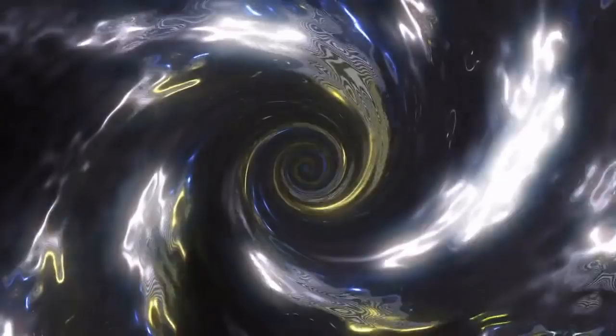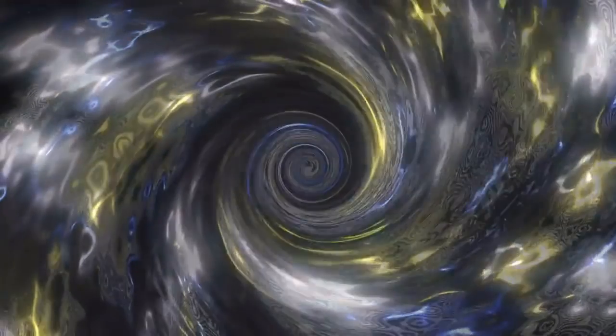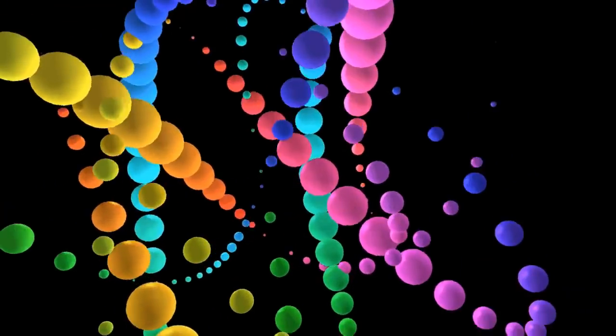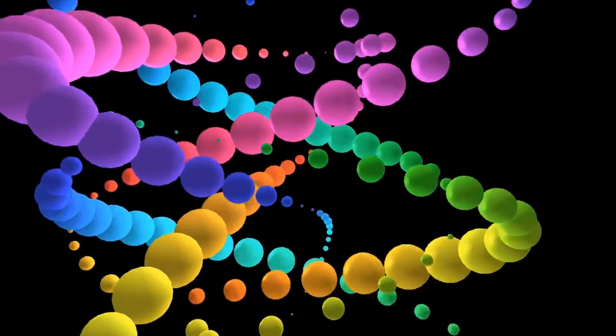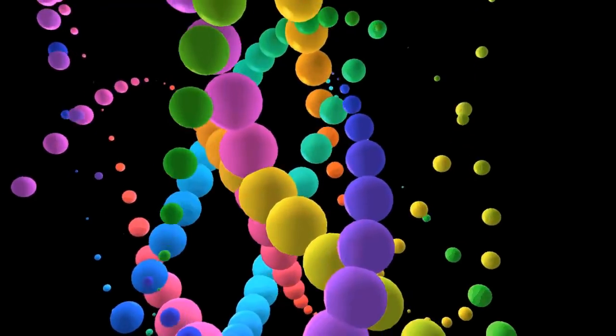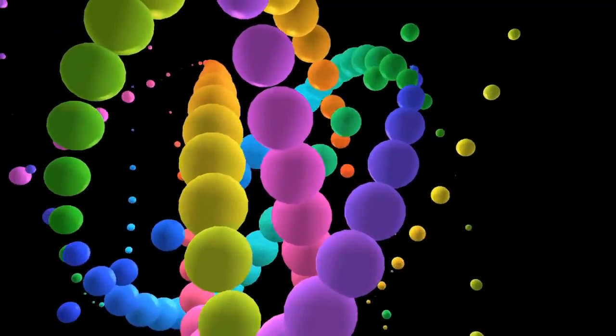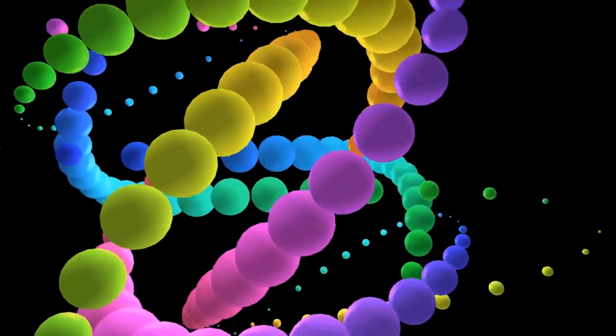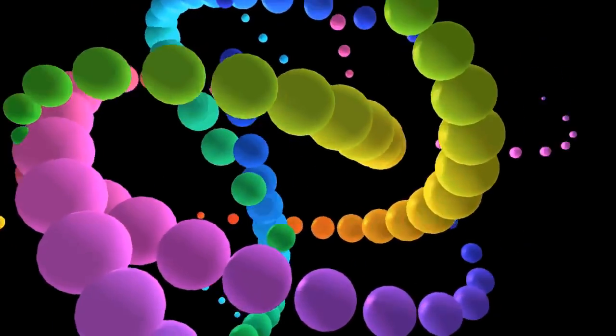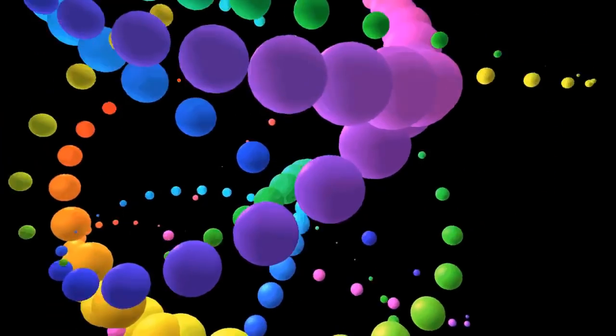Simplemente te visualizas subiendo esa escalera de nubes. Vas subiendo y ahora comienzas a ver que pasas entre las nubes y ves una luz, una luz intensa, una luz de color lavanda. Y es una luz que va directamente a tu cabeza y sientes la energía. Continúa con tu respiración y visualiza claramente una luz de color lavanda entrando por tu cuerpo, entrando por la cabeza. Y vas a sentir toda la energía como se distribuye por todo tu cuerpo.